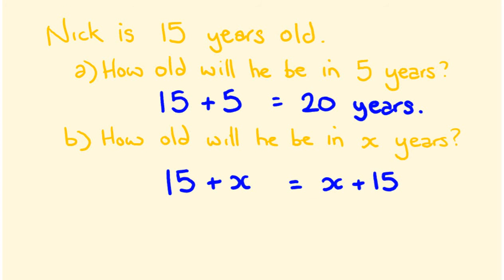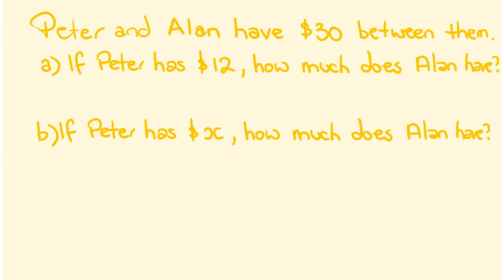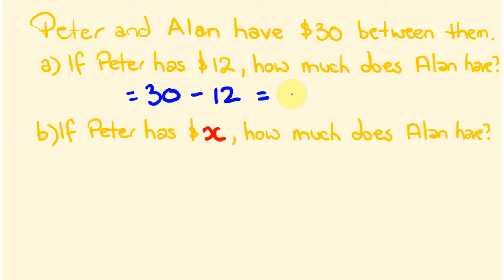Here's another question: Peter and Alan have 30 dollars between them. If Peter has 12 dollars, how much does Alan have? And if Peter has x dollars, how much does Alan have? For the first part: between them they have 30 dollars and Peter has 12, so we do 30 take away 12, which gives Alan 18 dollars.